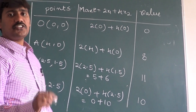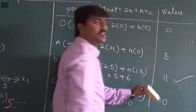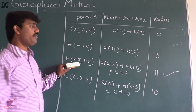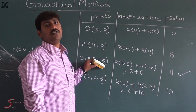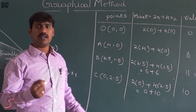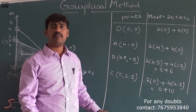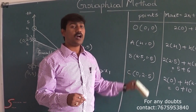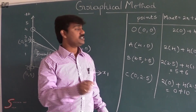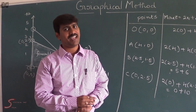Since the objective function is in the form of maximization, we have to consider the maximum value, that is 11. Hence the value of x1 is 2.5 and the value of x2 is 1.5, and the maximum of Z is 11. A company could make a profit of 11 rupees if x1 is 2.5 for product A and 1.5 for product B, to maximize the profit using the graphical method. Thanks a lot for watching this video. Thank you.